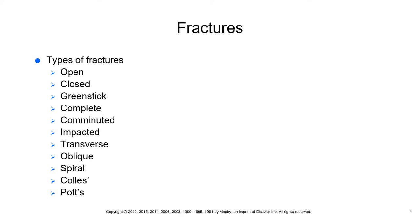The periosteum is the membrane that lines the outer surface of the bone. So a complete fracture extends completely through the bone and disrupts the periosteum on both sides. A comminuted fracture involves splintering of bone into three or more fragments.